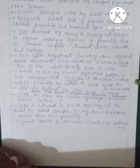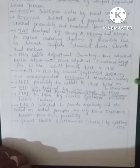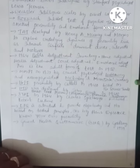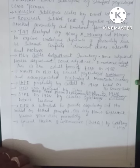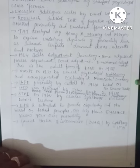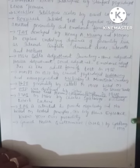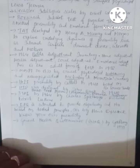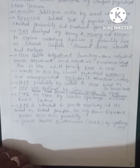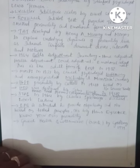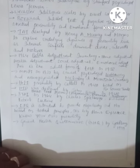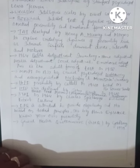In 1934, Bell's Adjustment Inventory focused on home adjustment, health adjustment, social adjustment, emotional adjustment, submissiveness, and masculinity versus femininity. This is the adult form of the test. In 1938, the MMPI — Minnesota Multiphasic Personality Inventory — was developed by clinical psychologists Hathaway and McKinley.